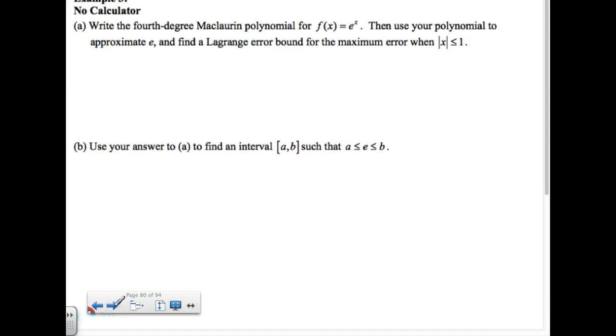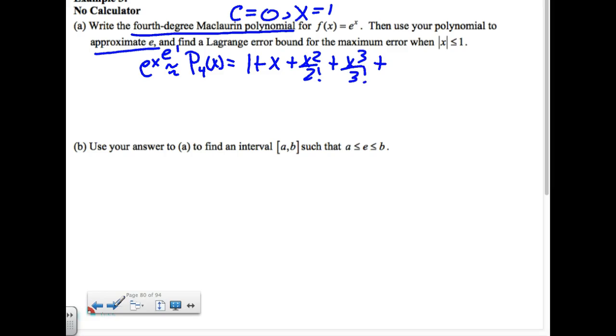All right, last one I think that I'll do today. So this one's e to the x. And again, it's getting that upper bound for the z that's going to bug you. So we're going to keep this accurate. It says fourth degree Maclaurin. So I'm centered at zero. And it says to approximate e, e is really e to the first. So my x is going to be at one. So we're going to start this off. We're going to create our polynomial. It's going to be called p sub four of x.